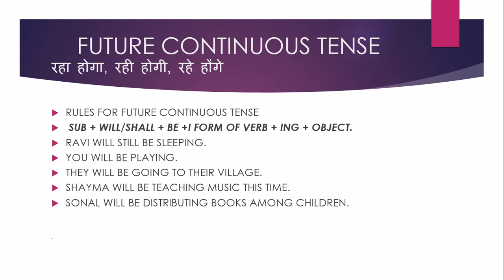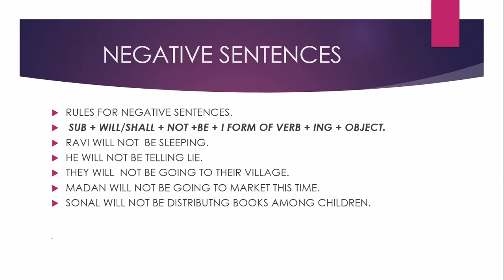Now, negative sentences of future continuous tense. Negative sentences में, हमेशा की तरह, helping verb के बाद not का use होता है, बाकी का rule as it is रहता है। Ravi will not be sleeping — Ravi नहीं सो रहा होगा। He will not be telling lie — वे झूट नहीं बोल रहा होगा। They will not be going to their village — वे अपने village नहीं जा रहे होंगे। Mother will not be going to market this time — Mother इस time market नहीं जा रही होगी। Sonal will not be distributing books among children — Sonal बच्चों के बीच books distribute नहीं कर रही होगी।